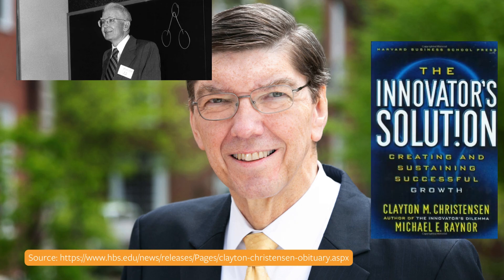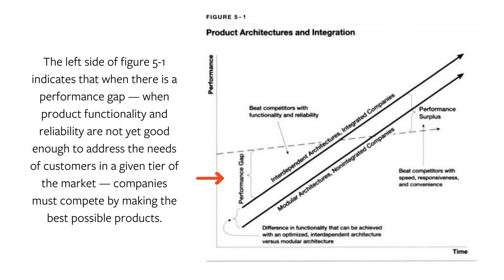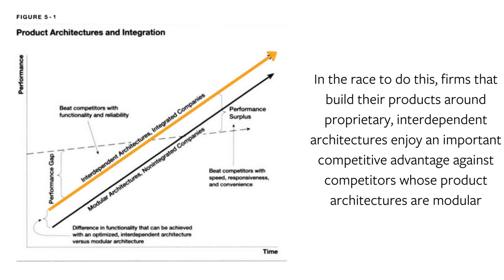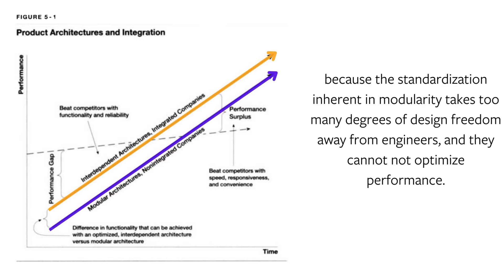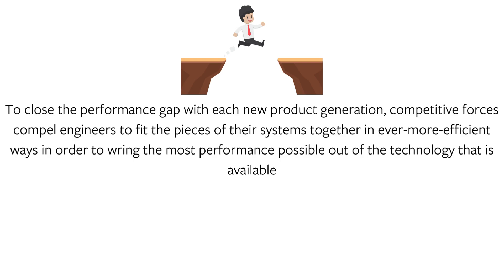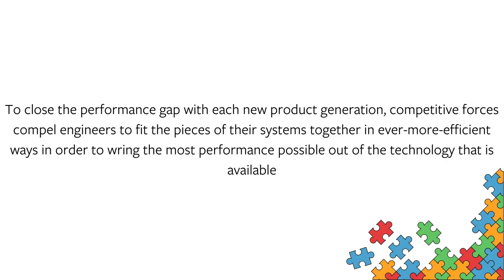It's Professor Clayton Christensen who extended the analysis of integration versus modularization beyond the economist's domain of measurable costs to the more ineffable realm of innovation. From the Innovator's Solution: when there is a performance gap — when product functionality and reliability are not yet good enough to address the needs of customers in a given tier of the market — companies must compete by making the best possible products. Firms that build their products around proprietary, interdependent architectures enjoy an important competitive advantage against competitors whose product architectures are modular, because the standardization inherent in modularity takes too many degrees of design freedom away from engineers, and they cannot optimize performance. To close a performance gap with each new product generation, competitive forces compel engineers to fit the pieces of their systems together in ever more efficient ways in order to wring the most performance possible out of the available technology.